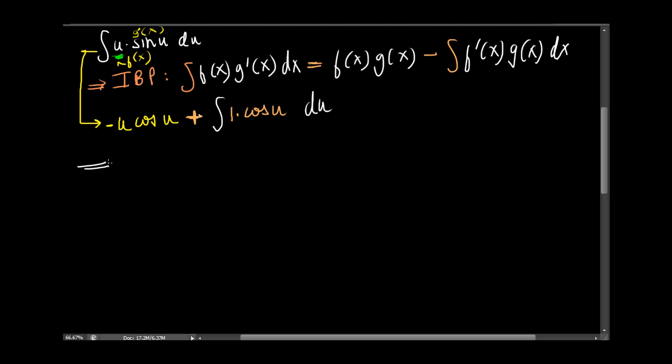So this simplifies to minus u cos u. Integral of cos u is sine u, right? Plus the sine of u plus some constant.